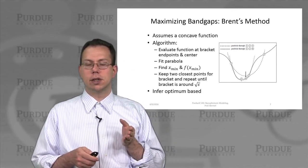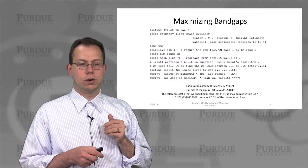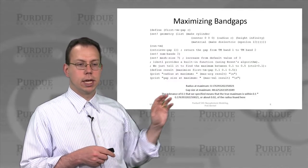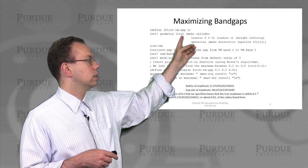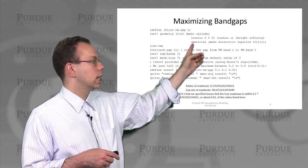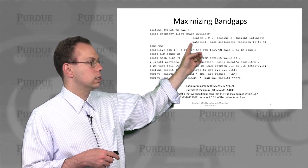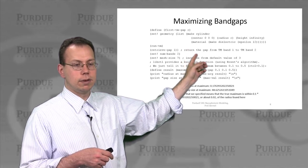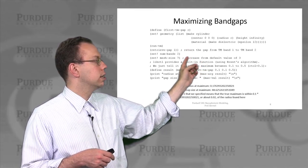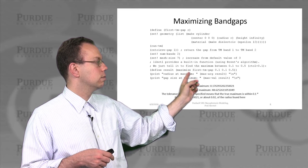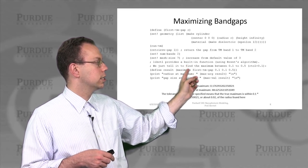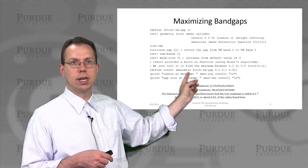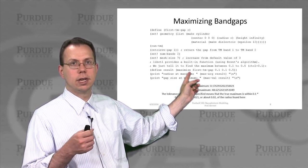And so you can actually implement this numerically in scheme. And so if you define that the bandgap has a certain value as a function of radius, and so we're only optimizing radius of the spheres, nothing else. And then we basically would define the gap, retrieve the gap, and then run the optimization algorithm using this so-called maximize function, which is defined in libctl, which is part of MPB.